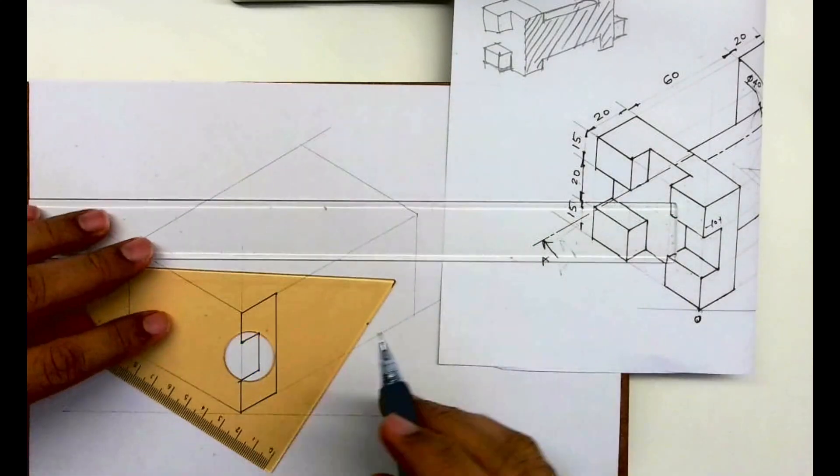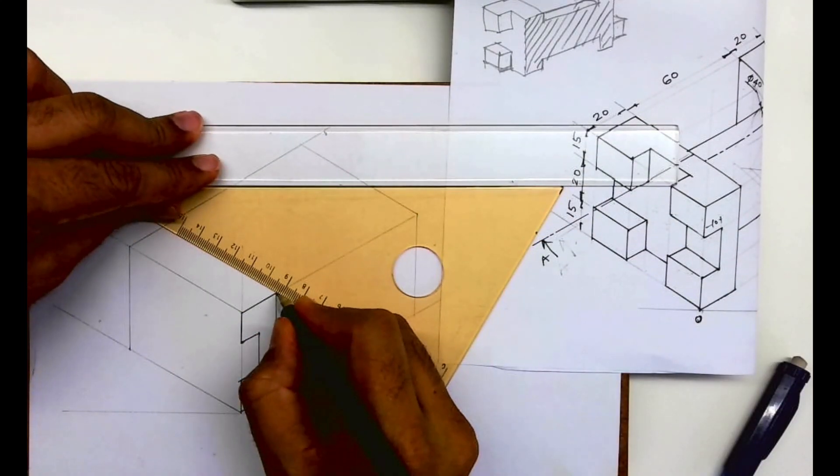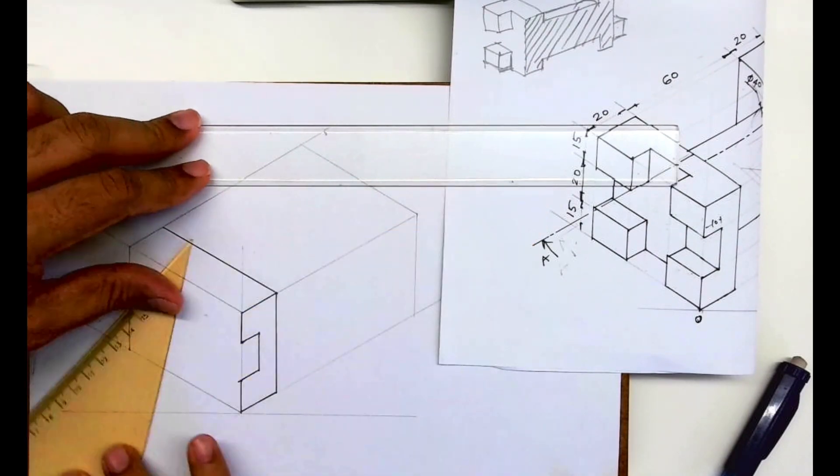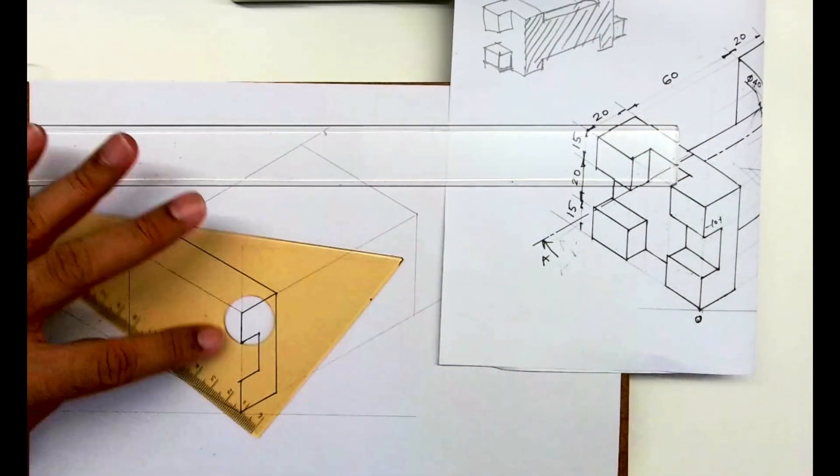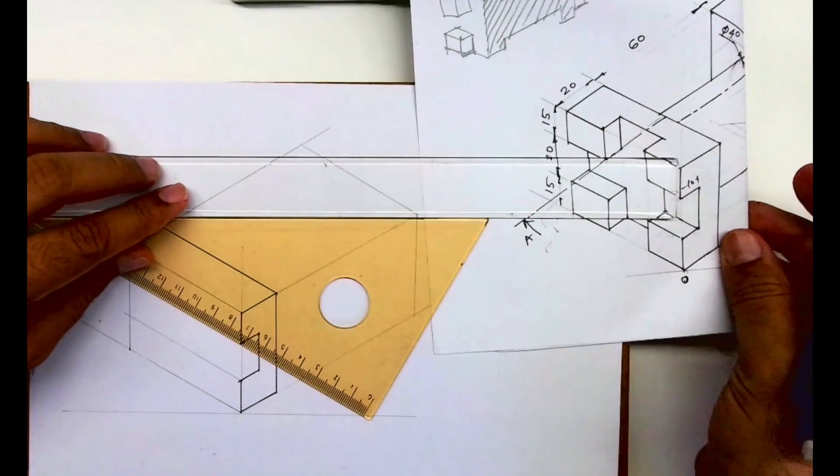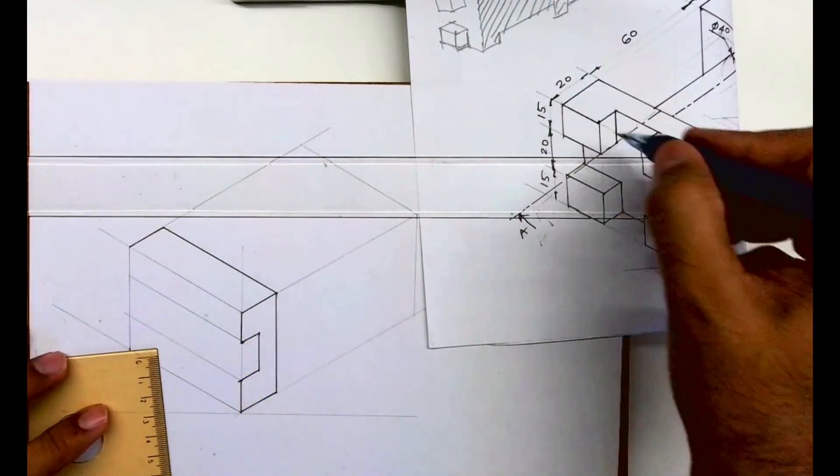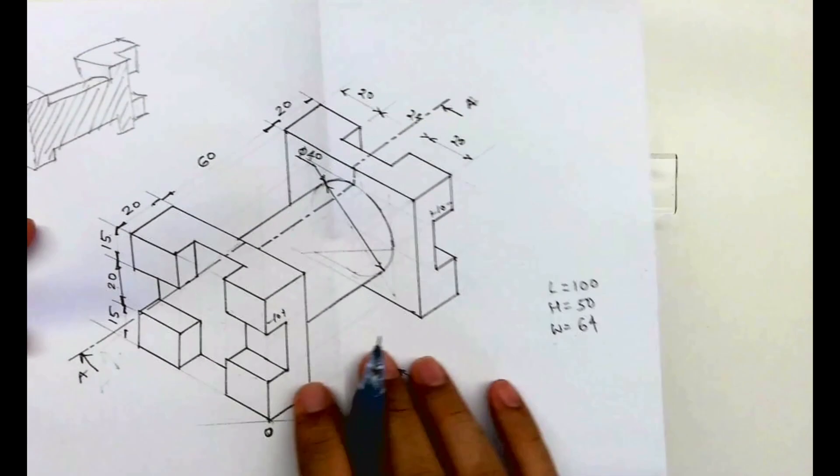Now we'll take this part behind. How much do you have to go behind? 64. After that, see this 20.